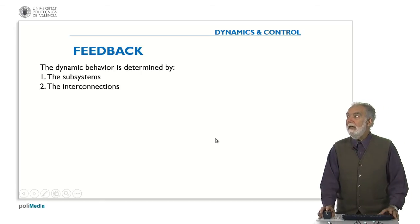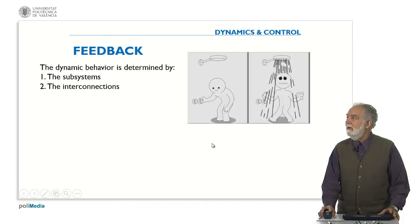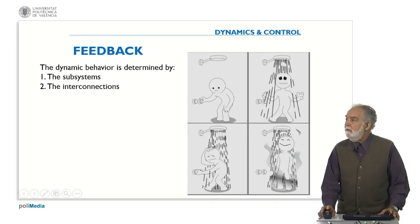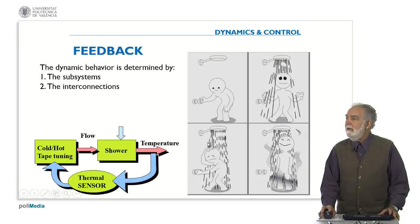Then the dynamic behavior is determined by the subsystems and the interconnections between them. Let's see another very simple and very close example. If you are going to take a shower and you open the tap for cold or hot water, probably at the beginning it would be too cold or too hot. Then you start to tune the tap until you reach the appropriate temperature of the water. So in that case the feedback is your action. You are also the controller in that case. This is a diagram showing that there is feedback between the detection of the temperature, in that case the thermal sensor is your own skin, and the tuning of the tap for the cold or the hot.